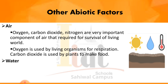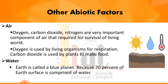Oxygen is very important for living individuals. The next abiotic factor is water. Earth is called the blue planet because 70% of Earth's surface is comprised of water. Water is required for survival and is the major component of living cells — 90% of a cell is made up of water. Plants absorb water from the soil through their roots, and animals drink water or get it from the food they eat.